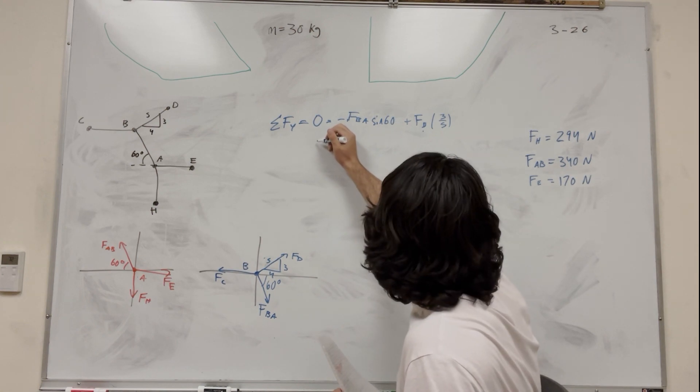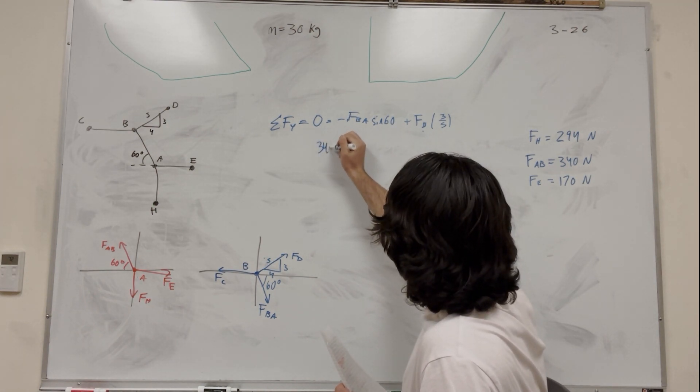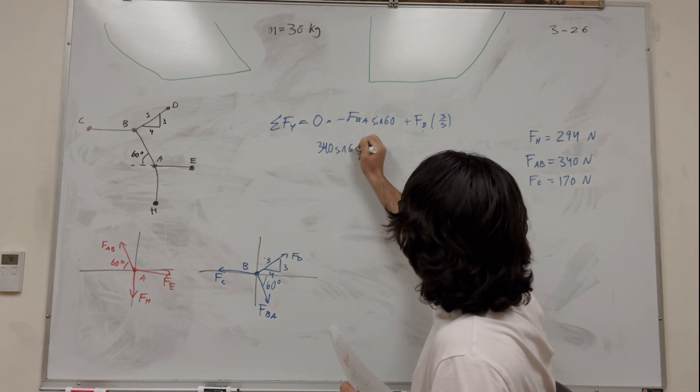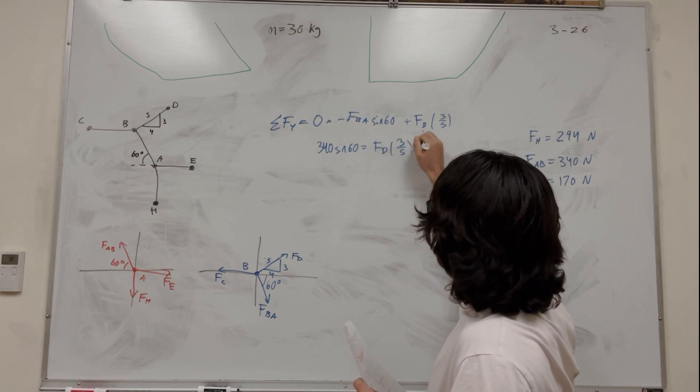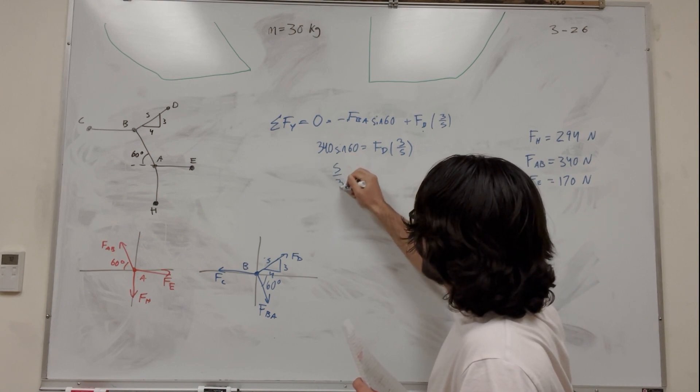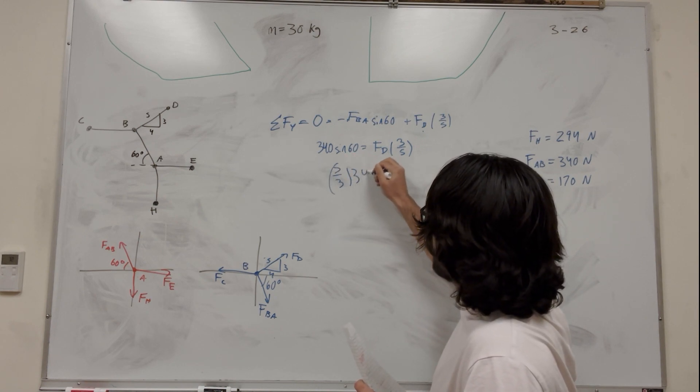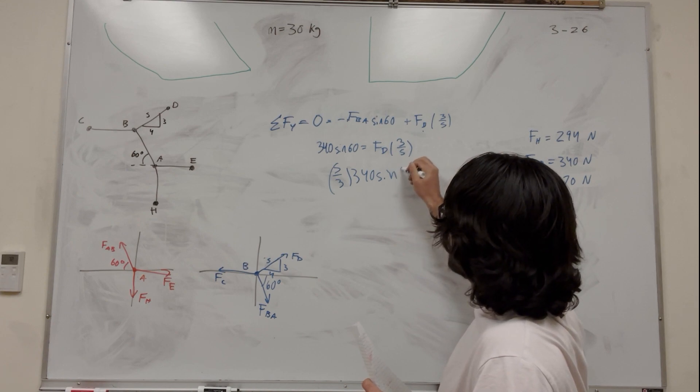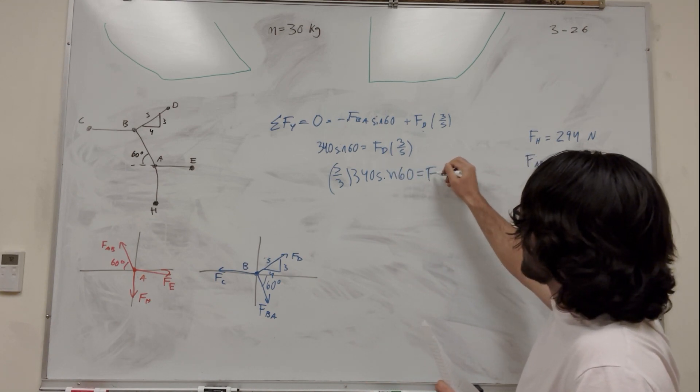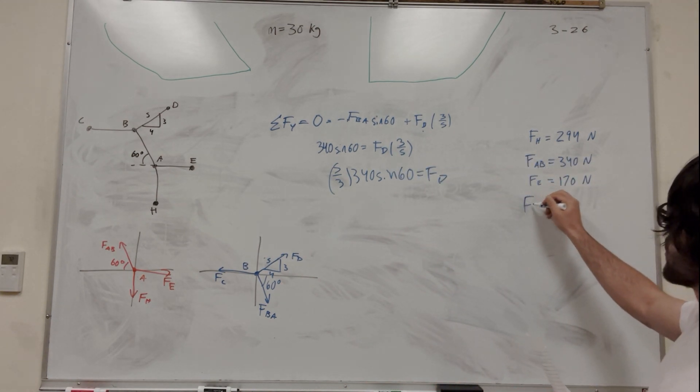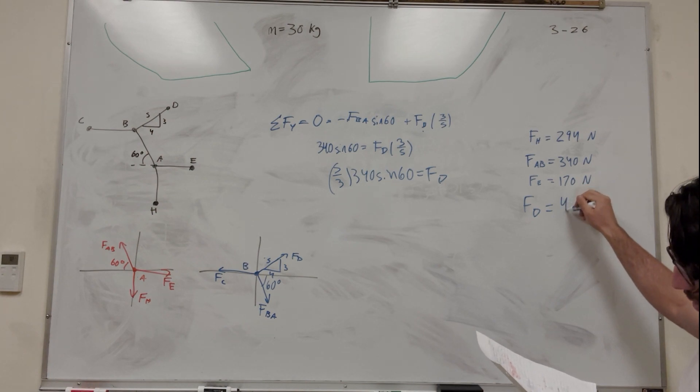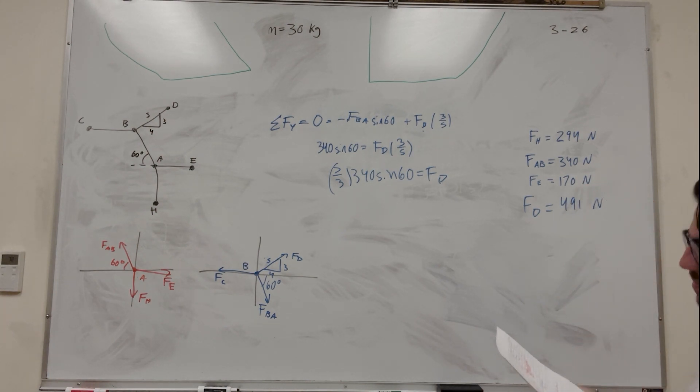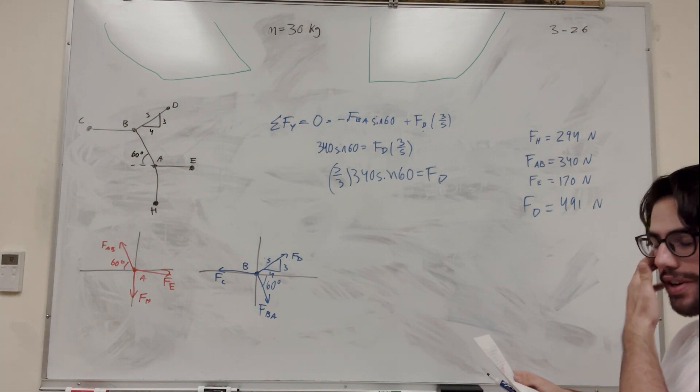Alright, so force BA is the same as force AB, right? We said force AB is equal to 340 newtons. So then we can say force BA is also equal to 340 newtons. And we know it's pushing downward, which is this negative sign, so we already counted for that. So move this over to the other side. We're going to get 340 sine of 60 is equal to force D 3 over 5. So then, of course, we're going to multiply the 5 thirds over. 340 sine of 60 through force D. So let's do this. Force D is equal to 491 newtons. Nice. Figured that part out.